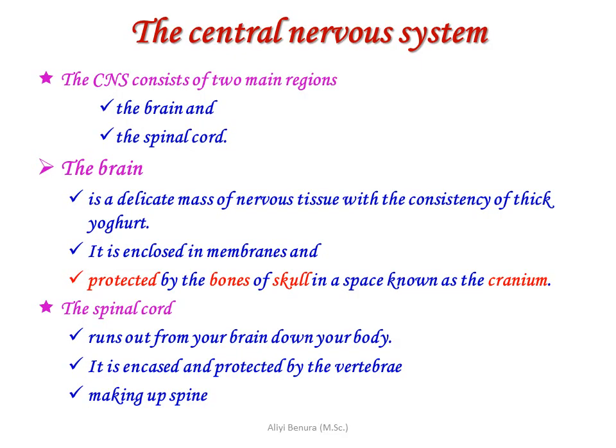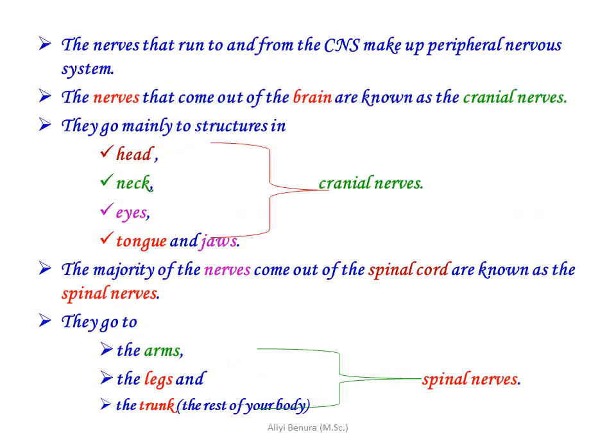The central nervous system consists of two regions: the brain and the spinal cord. The brain is a delicate mass of nervous tissue enclosed in a membrane and protected by the bones of the skull in a space known as the cranium. The spinal cord runs from your brain down your body, encased and protected by the vertebrae making up the spine.